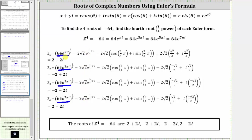Now we multiply each exponent on e by one-fourth. For Z sub one, pi i times one-fourth equals one-fourth pi i. For Z sub two, three pi i times one-fourth equals three-fourths pi i. For Z sub three, five pi i times one-fourth equals five-fourths pi i. And for Z sub four, seven pi i times one-fourth equals seven-fourths pi i. So now we have the exponential forms of the four complex solutions or four roots.